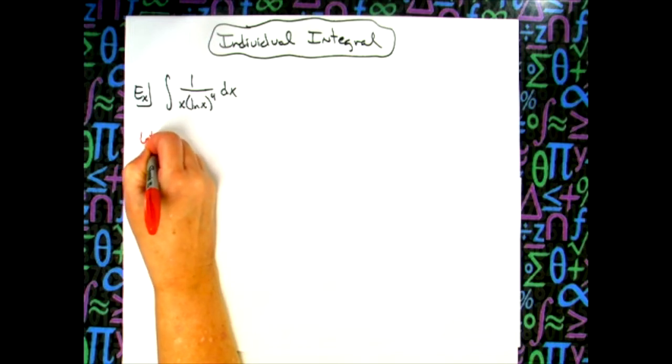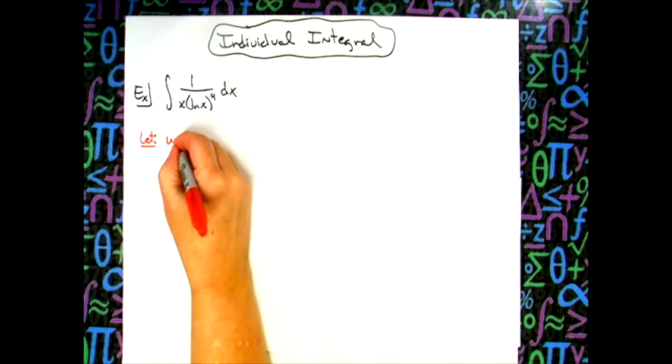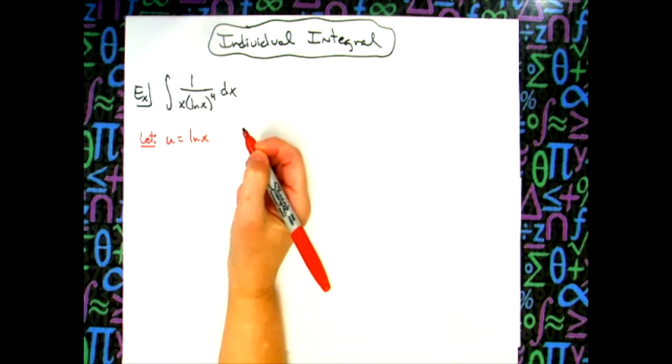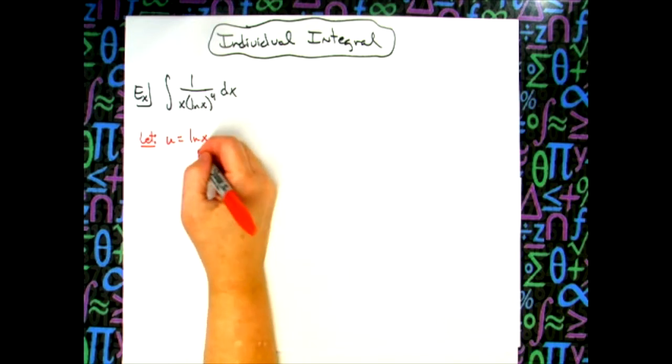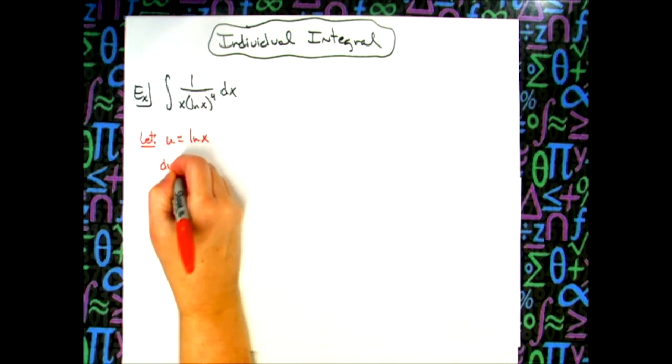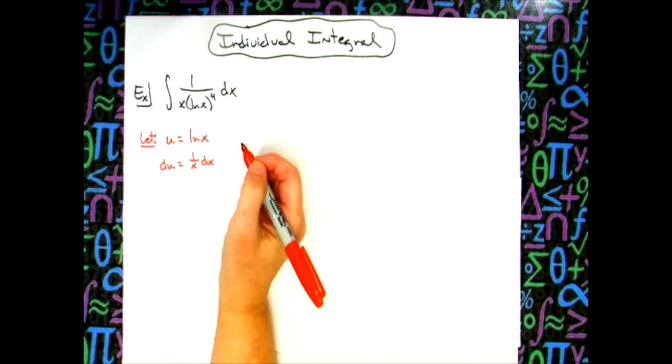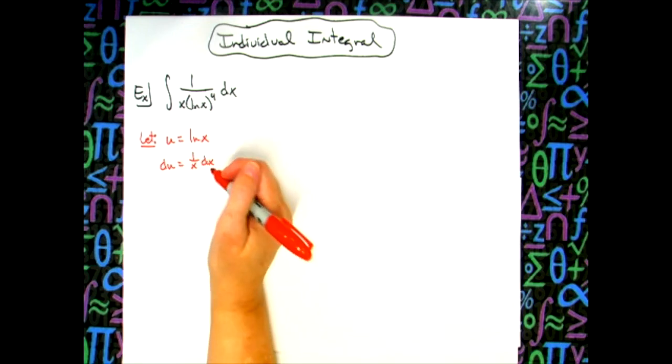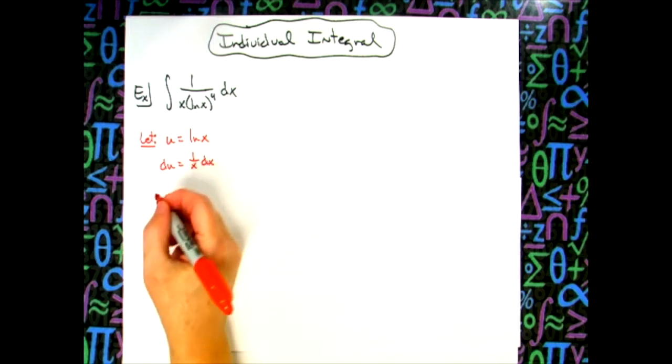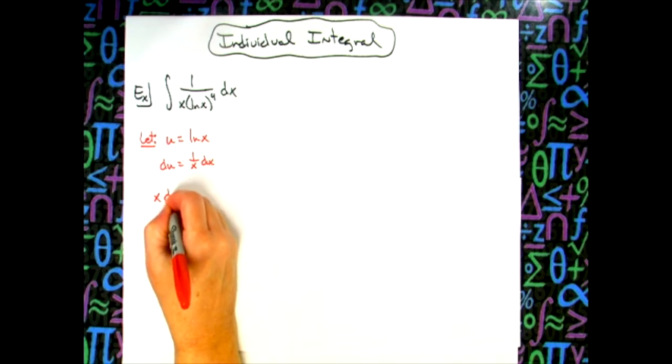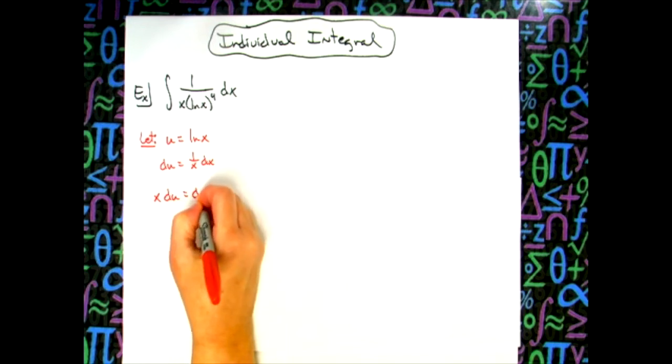So we're going to let our u be natural log of x. And when I take the derivative of both sides, I'll have du is equal to that 1 over x dx. Now I do all algebra steps. So solving all the way down for that dx, I'm multiplying both sides by x. I'm going to have x du is equal to that dx.